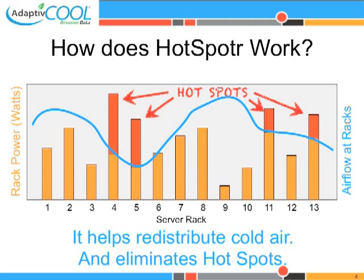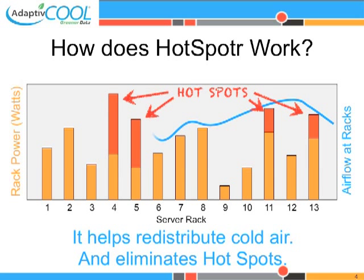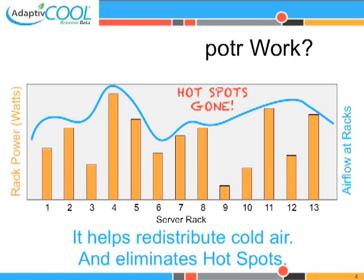The hotspotter can change airflow distribution in the data center. It brings cold air into server racks with cooling problems and eliminates hotspots instantly.